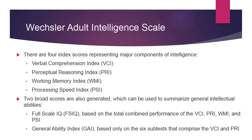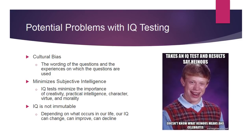Some potential problems with IQ testing include cultural bias — the wording of questions and the experiences on which questions are based. If you've never experienced living in an environment where people have yards and the question asks about the area of a yard, that will be a foreign idea. IQ tests also minimize subjective intelligence — creativity, practical intelligence, character, virtue, and morality. And IQ is not immutable; depending on what occurs in our life, our IQ can change, improve, or decline.